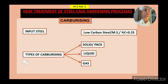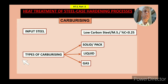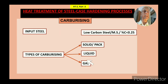Input steel: the steel required for this process is low carbon steel, also called mild steel — any steel having a carbon percentage less than 0.25%. Low carbon, low alloy steel can also be used. There are three types of carburizing: solid, liquid, and gas carburizing.